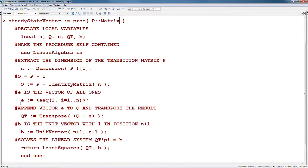E is the vector of all ones, declared as a sequence of all ones from 1 to n. We append the vector E to Q and transpose the result using the linear algebra transpose command. Inside of here, this is just vector notation—we're concatenating Q and E.